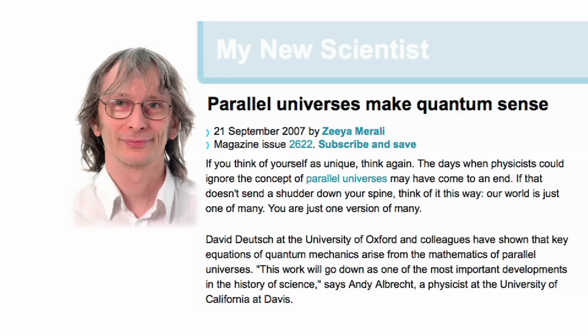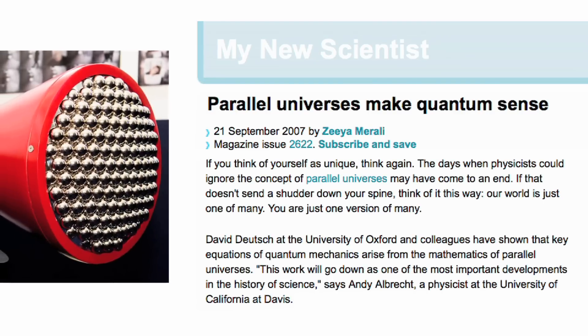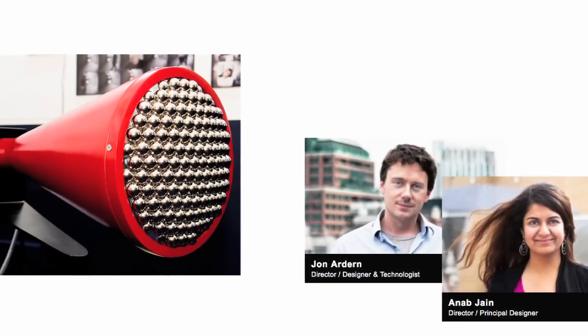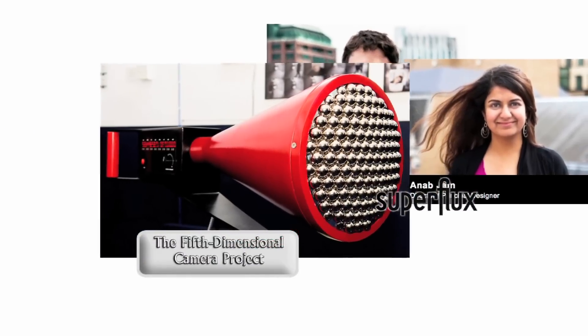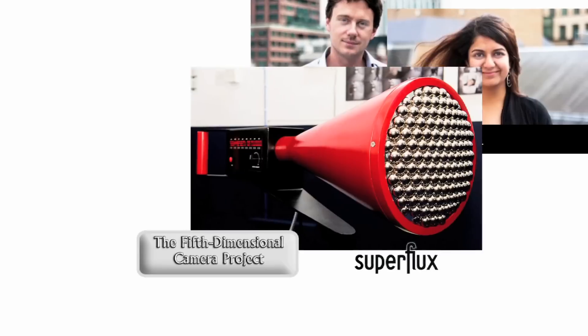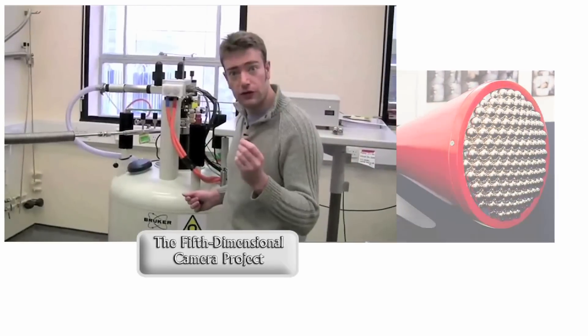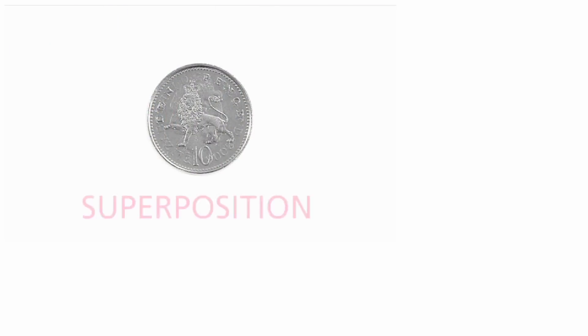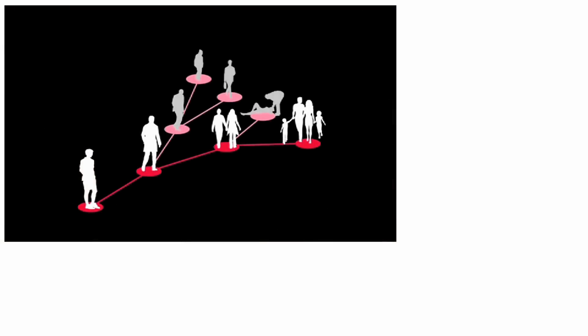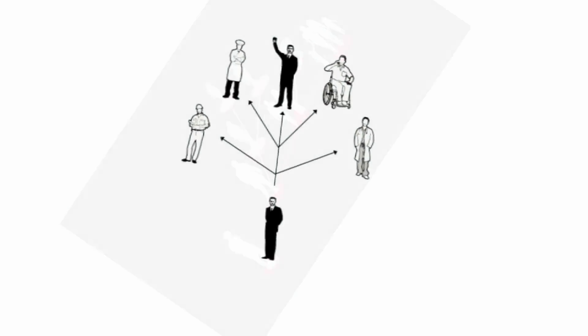New Scientist magazine declared this to be one of the top science news stories of the year. In 2010, a team of scientists at Oxford participated in a speculative art project created by John Ardern and Anab Jain as Superflux — the fifth-dimensional camera project. David Deutsch acted as one of the consultants on this project too, but a particular note is a video featuring Dr. Simon Benjamin, who is from the Quantum Information Processing Interdisciplinary Research Collaboration (QIPIRC), based at Oxford University. Within this video, Dr. Benjamin shows a diagram very similar to the ones from my project of branching timelines resulting from chance and choice, and he suggests that these are occurring at the fifth dimension.